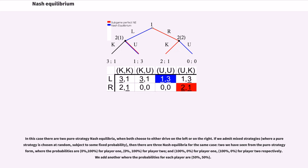In this case there are two pure strategy Nash equilibria, when both choose to either drive on the left or on the right. If we admit mixed strategies, then there are three Nash equilibria for the same case: two from the pure strategy form, where the probabilities are specified for player one and player two respectively, and we add another where the probabilities for each player are equal.